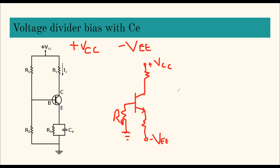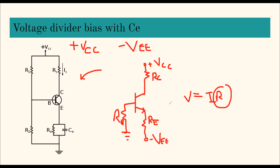If RB is very small, the base voltage is approximately zero because V = IR, and if R is zero, voltage is zero. The emitter voltage is then less than the base voltage by VBE. Let us find the emitter current IE using KVL in the emitter loop. The source is VEE, and the voltage drops are across RE (which is IE×RE) and the base-emitter junction (VBE).